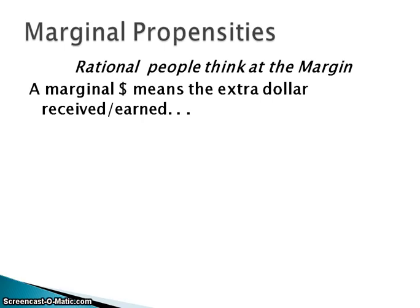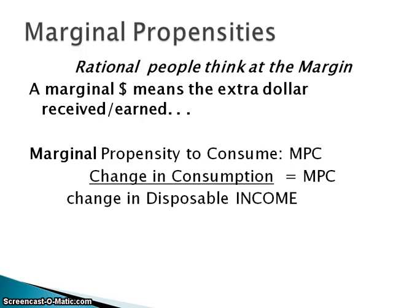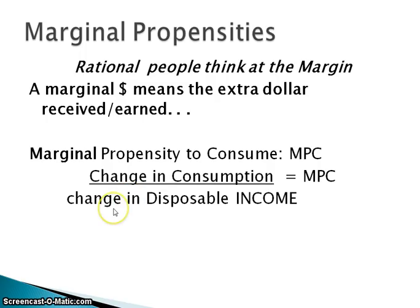We're rational people and we think at the margin. What we're looking at is the additional disposable income we earn and how that affects the amount that we consume. The marginal propensity to consume, known as the MPC, equals the change in consumption divided by the change in disposable income.